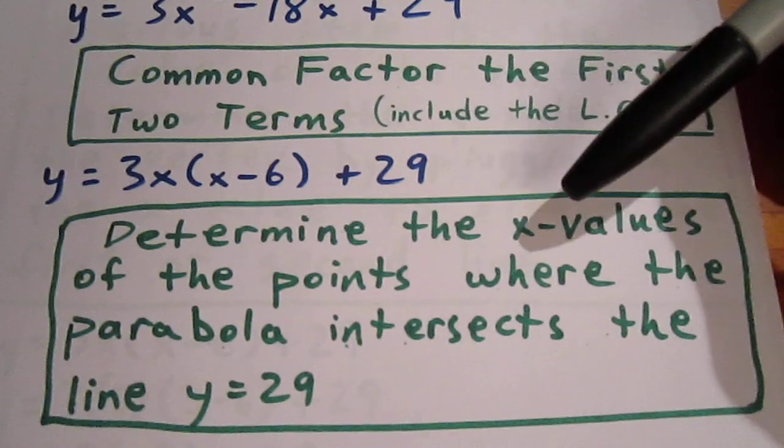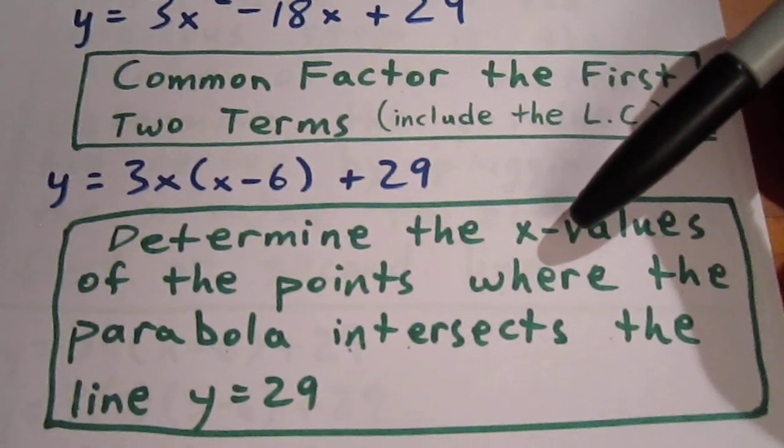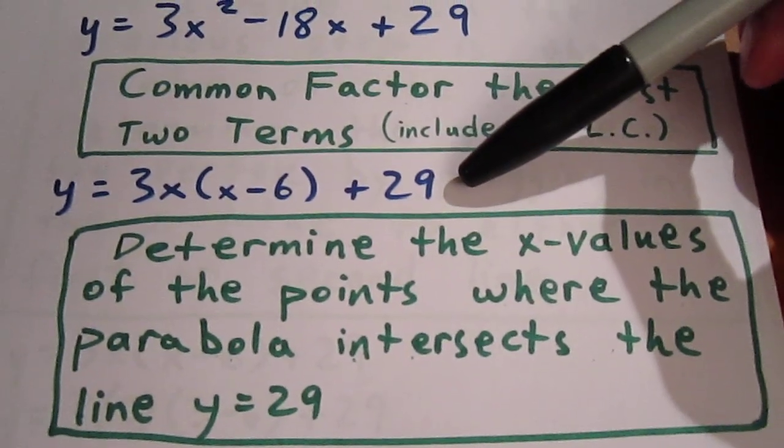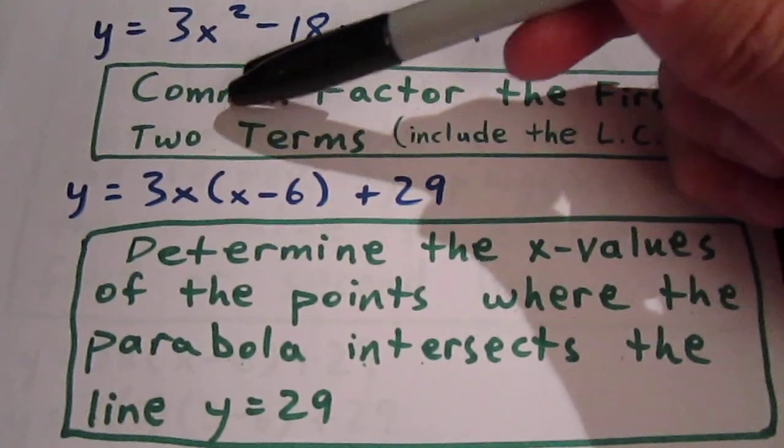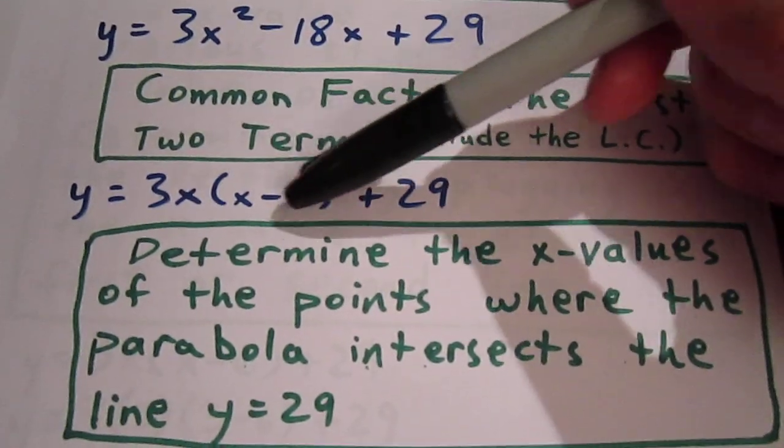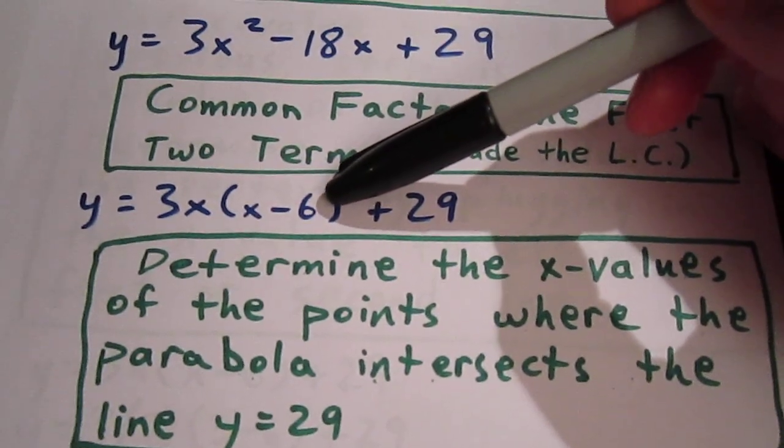Now we can determine the x values where this parabola intersects the horizontal line y equals 29 by trying to determine the x values where this part of the expression equals 0.